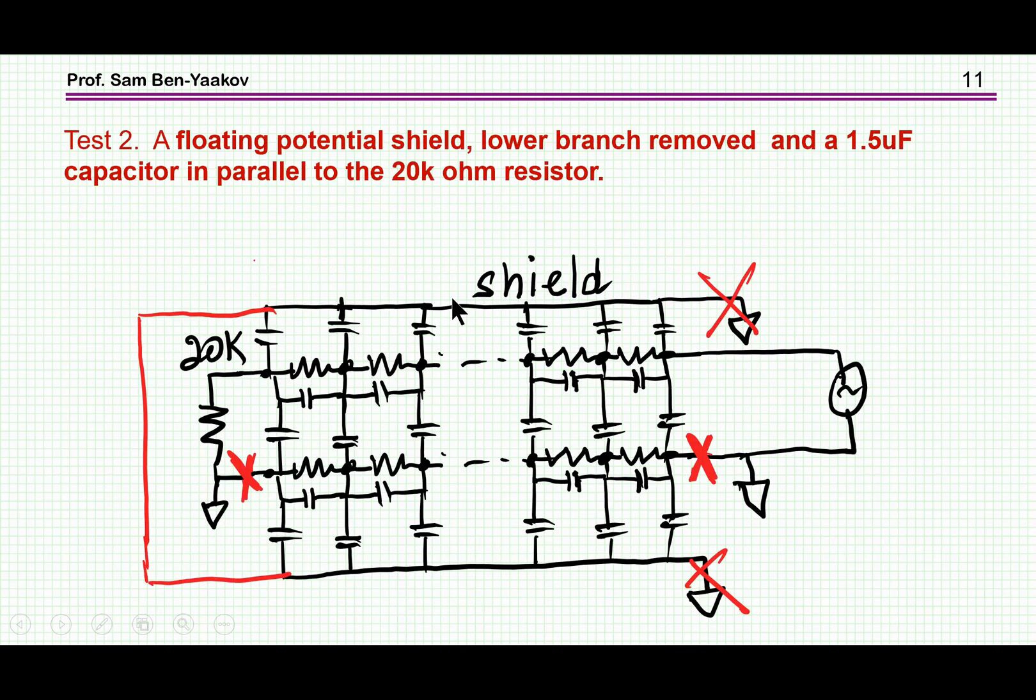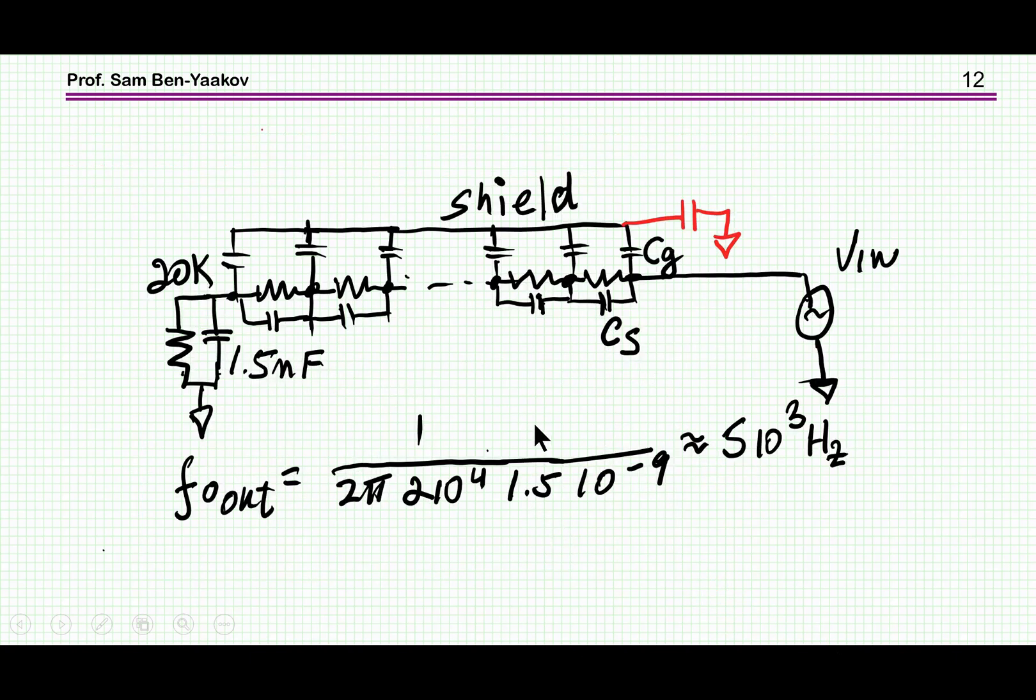So in order to simplify the situation, there is another test that was done. First of all, we have cut out the lower branch here, so this branch does not contribute to the operation. And also, there was a shield that was put underneath the board to separate it from the table, and this shield was floating, so it's not connected to the ground.